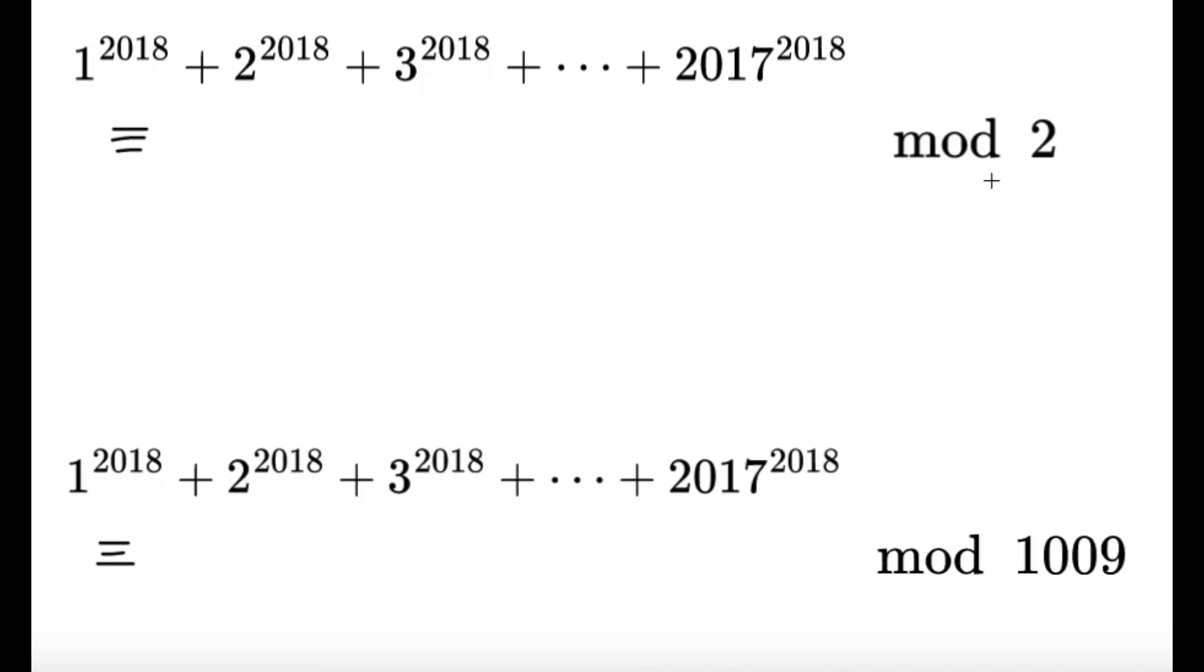The mod 2 is the easier case. Let's try to take this sum mod 2. 1 raised to 2018 becomes 1, 2 raised to 2018 becomes 0, 3 raised to 2018 becomes 1, and this pattern will alternate, and then until 2017 raised to 2018, modulo 2, it's going to be 1.